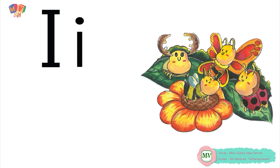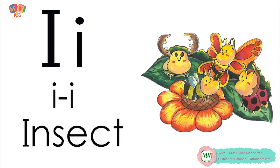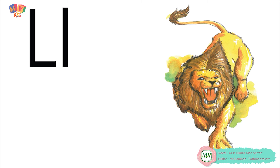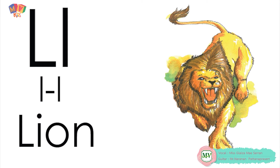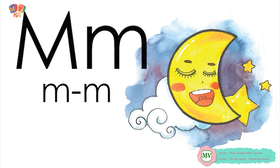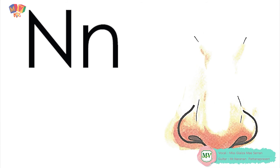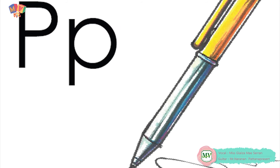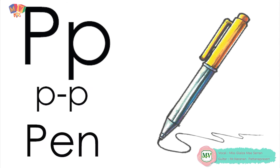I is for insect — e, e, insect. J is for juice — j, j, juice. K is for kite — k, k, kite. L is for lion — l, l, lion. M is for moon — m, m, moon. N is for nose — n, n, nose. O is for orange — o, o, orange. P is for pen — p, p, pen.